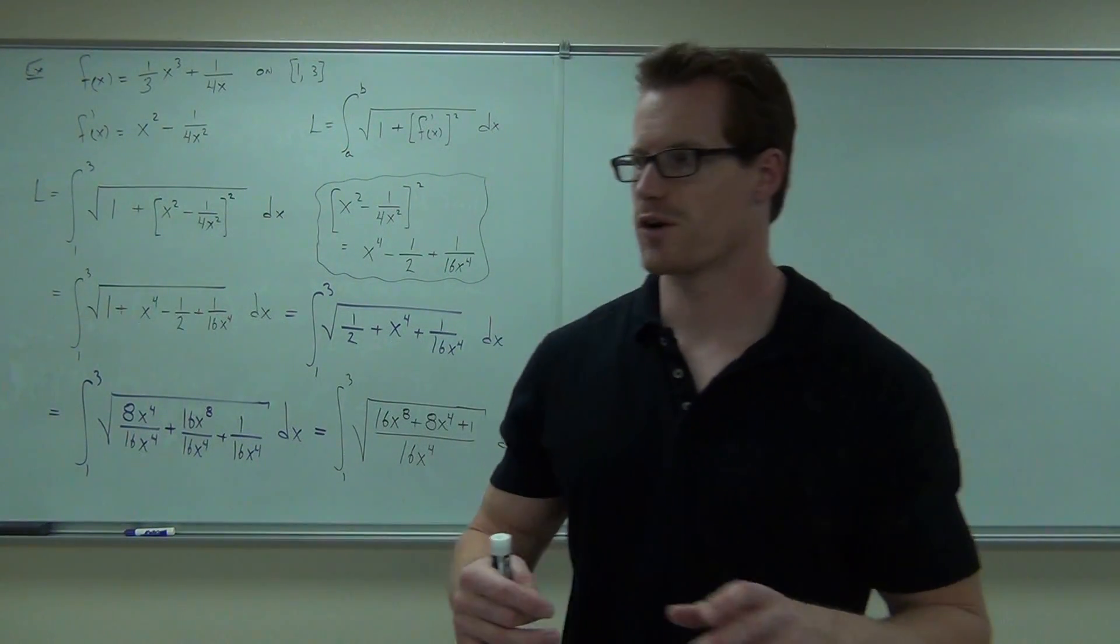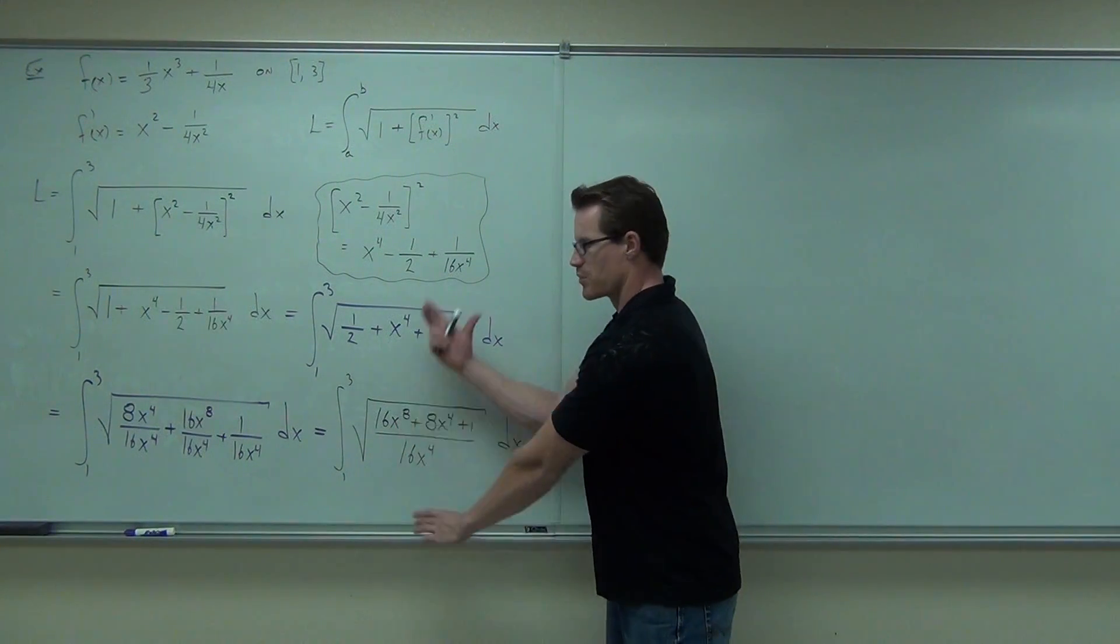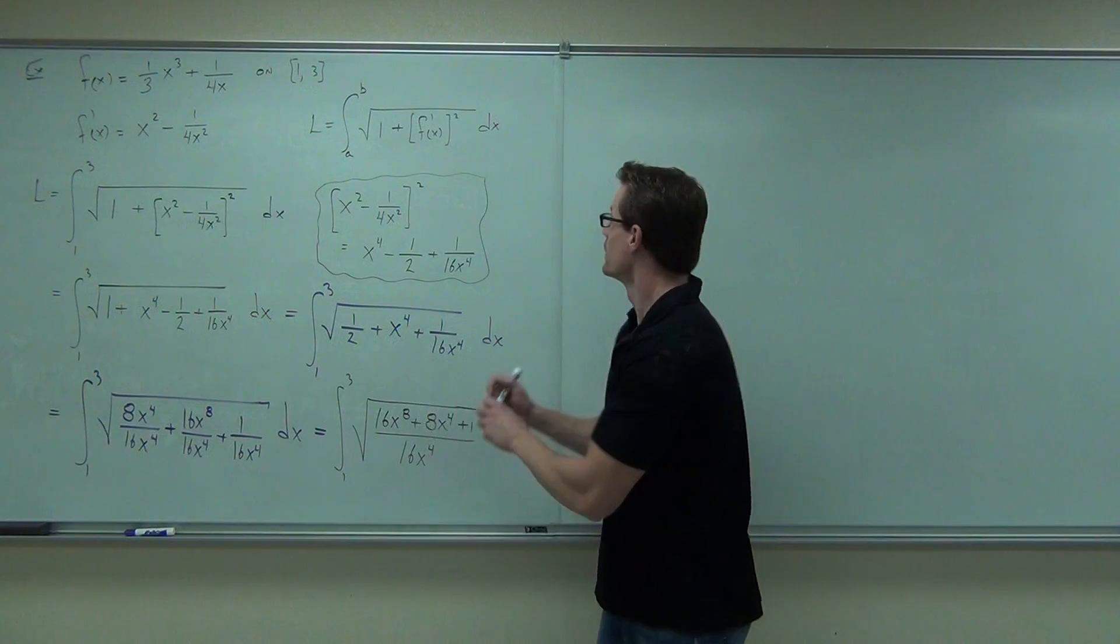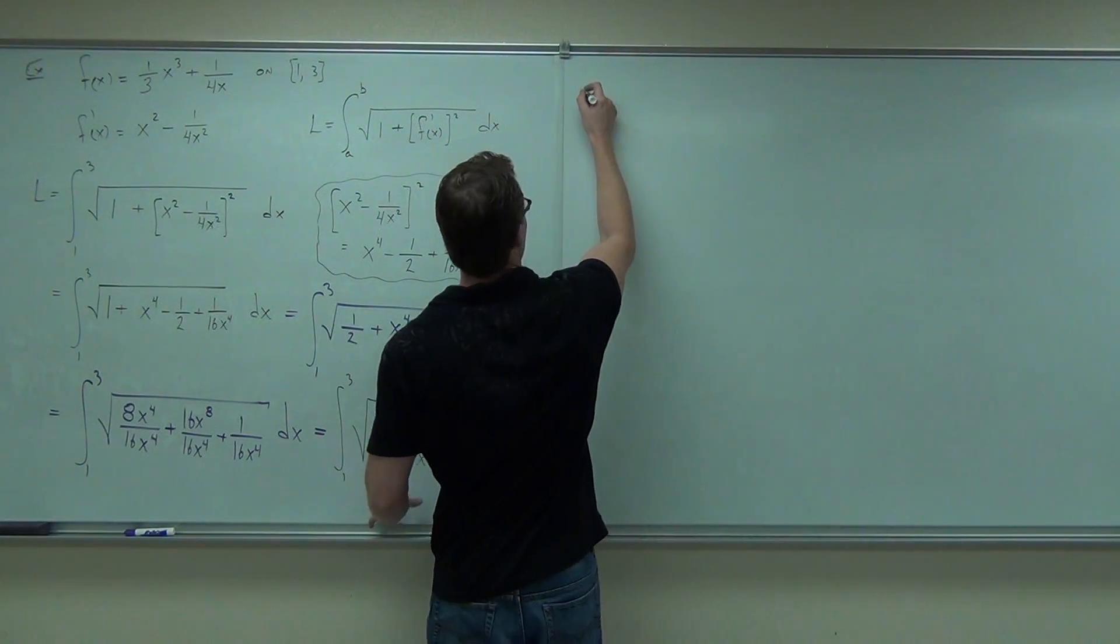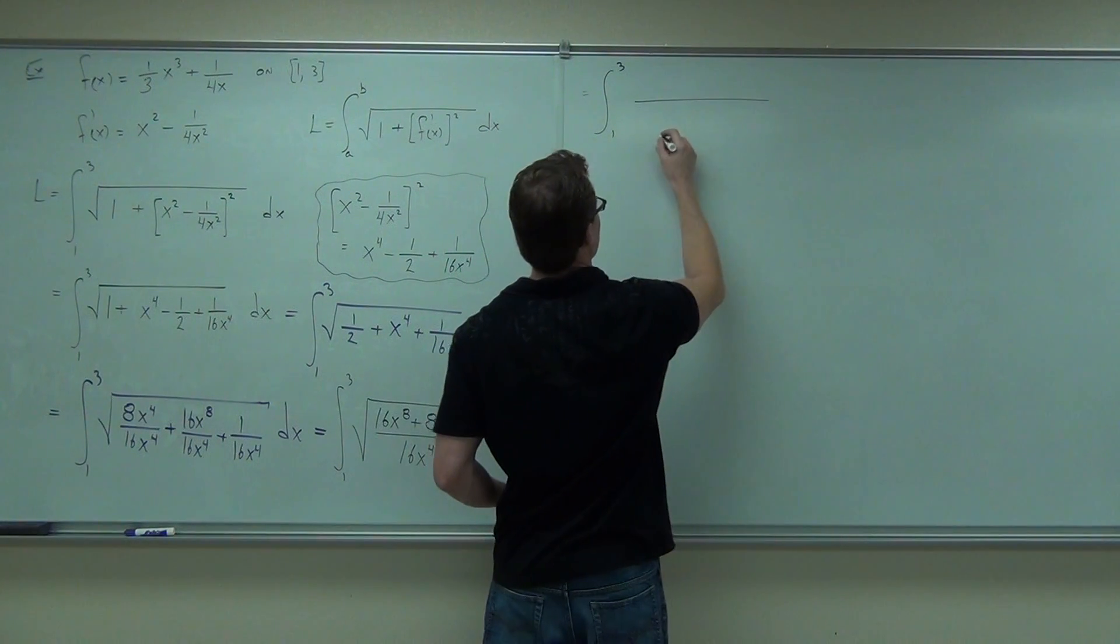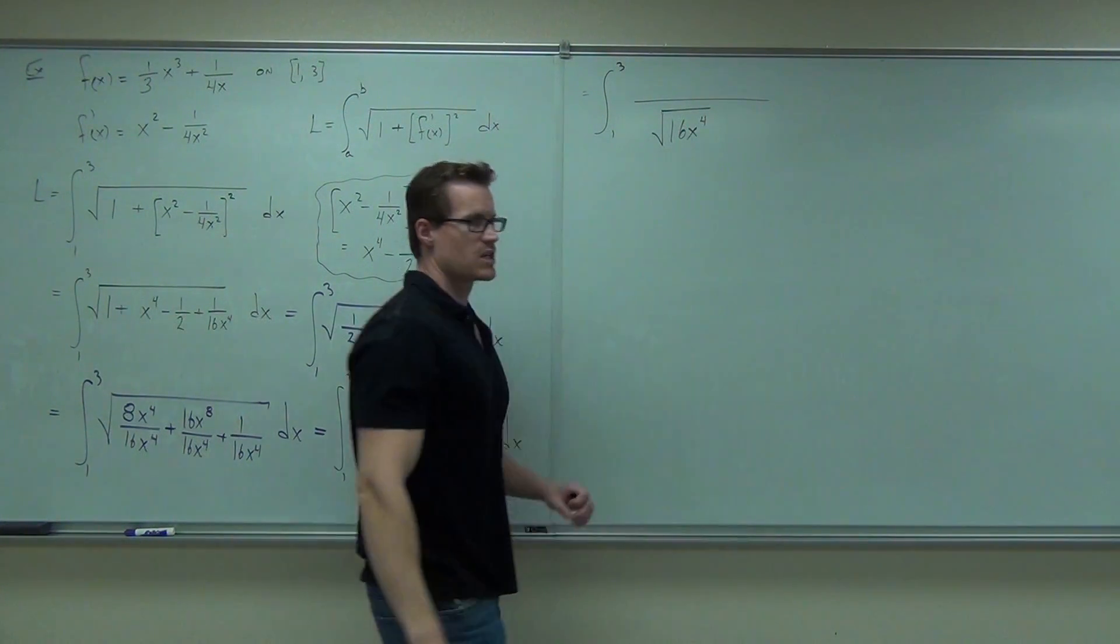All algebra right now. All algebra. 16x to the eighth, 8x to the fourth, yes. Plus one, yes. All over our common denominator, we're good to go. Do you feel okay with this so far? Now, I told you this is kind of a special function because when you look at it, notice how now I can break up my square root by the numerator and the denominator.